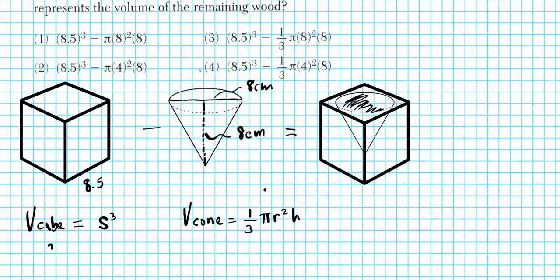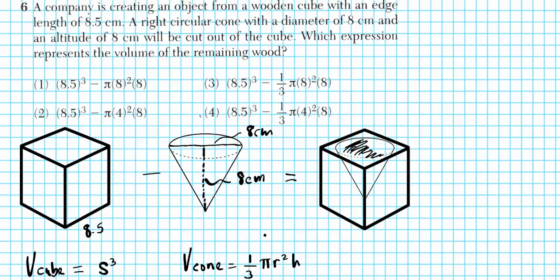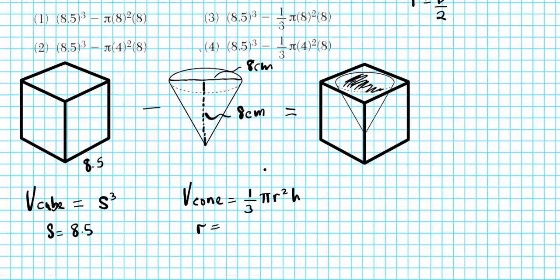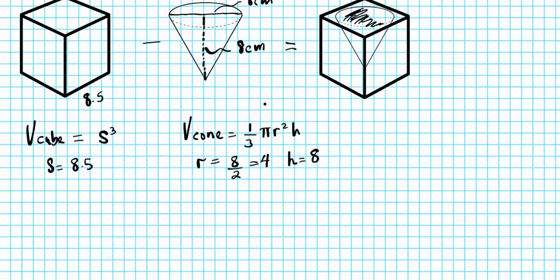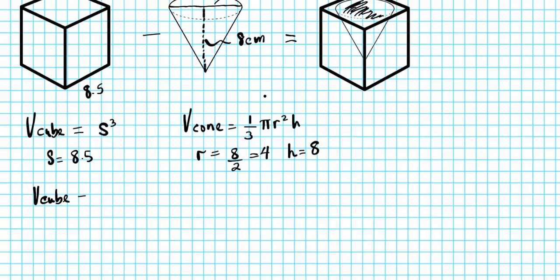For this cube the side length s is equal to 8.5. For the cone we need the radius and the altitude. The diameter is 8 centimeters, so the radius is diameter divided by 2, which gives us 4 centimeters. The altitude, which is also the height, is 8 centimeters. The volume of the cube is 8.5 raised to the third power.